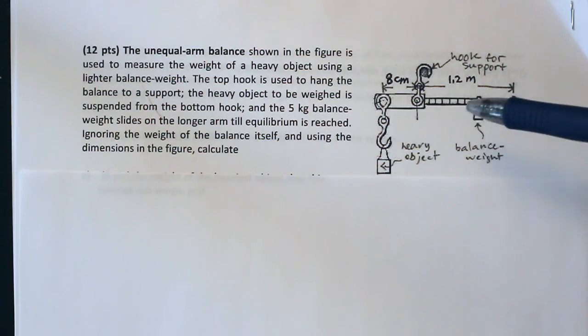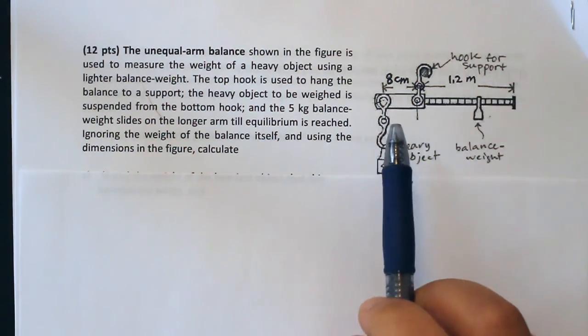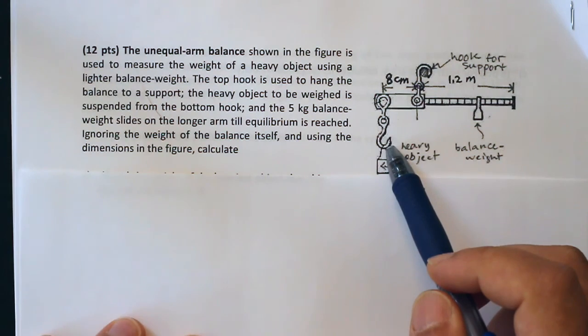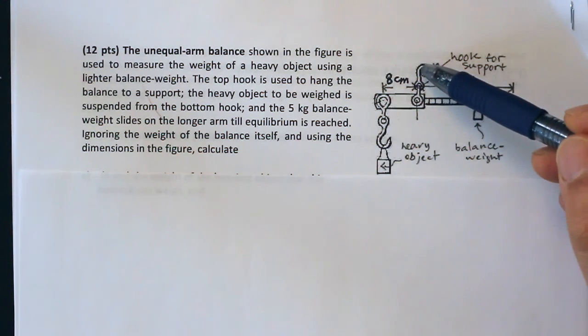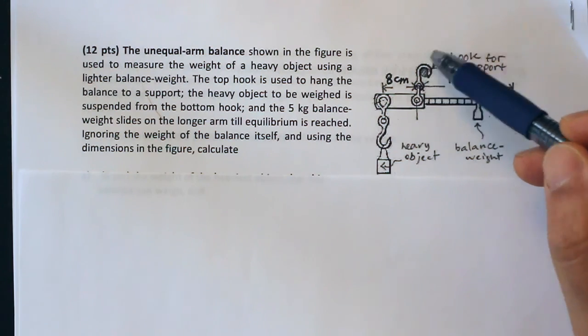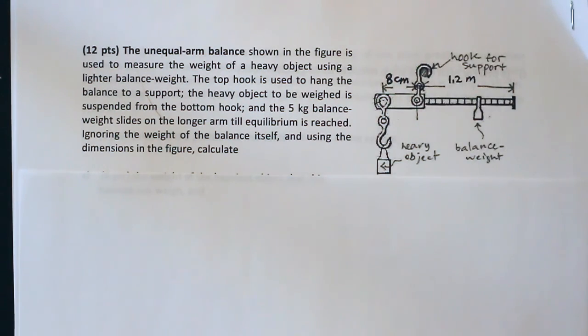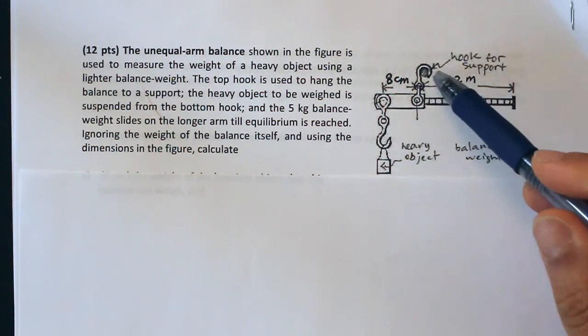Hopefully after you've read the question, you realize that this unequal arm balance works by putting a heavy object on this hook, and then you support this hook somehow by either putting a bolt to the wall or holding it in your hand or something.